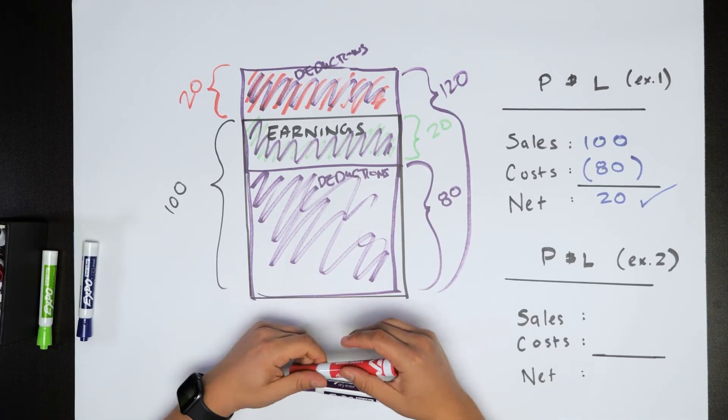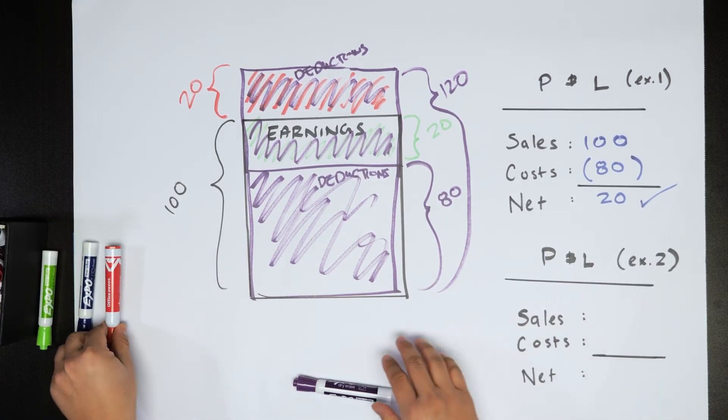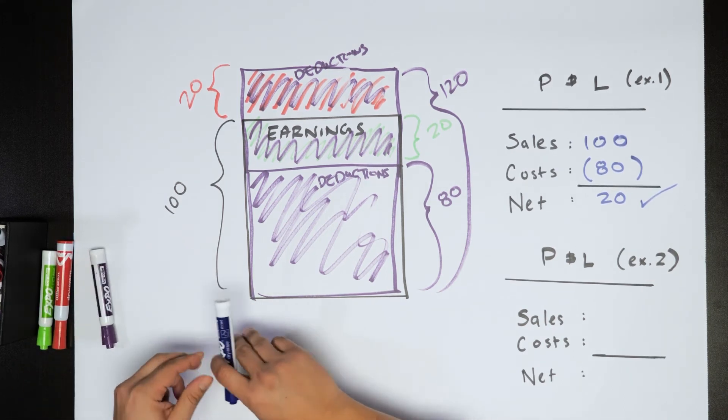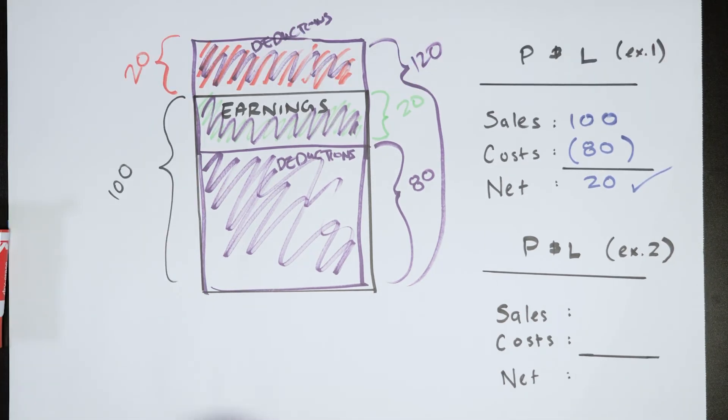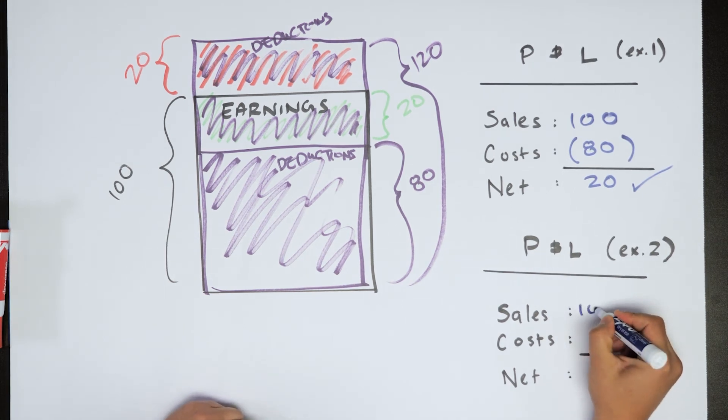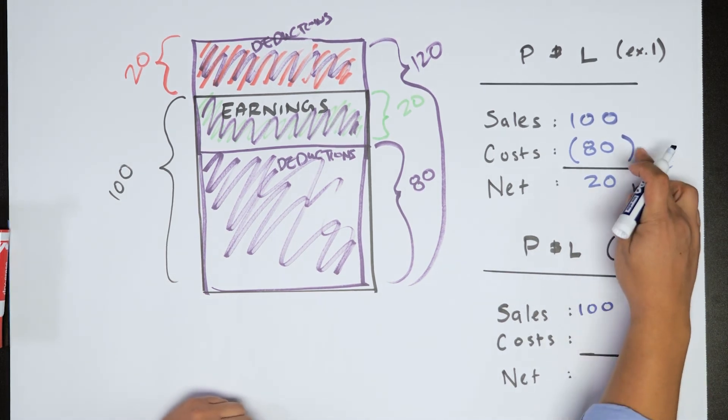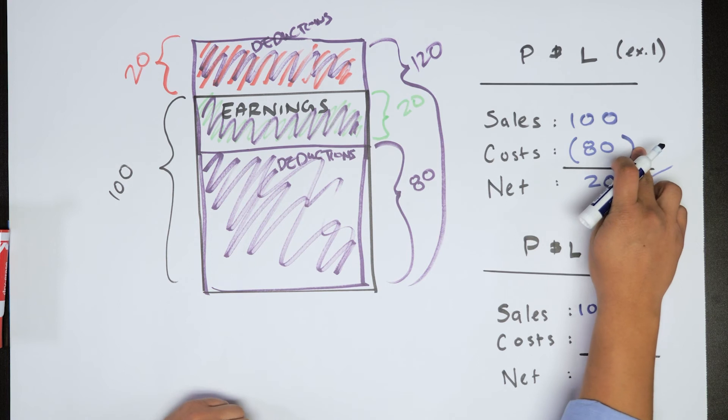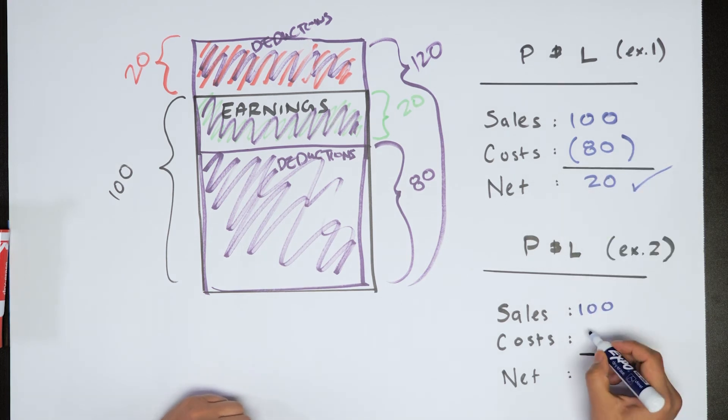So how do we show that on a P&L when that happens? Well, let's draw it out in our example here, right under our previous one. So we had sales of 100. Our costs have changed. So what number goes here? And hopefully you're mouthing to yourself 120. Okay. And again, we're showing that up as negative. Now our net was 20, but because our deductions exceed our earnings, that's going to show up as negative.